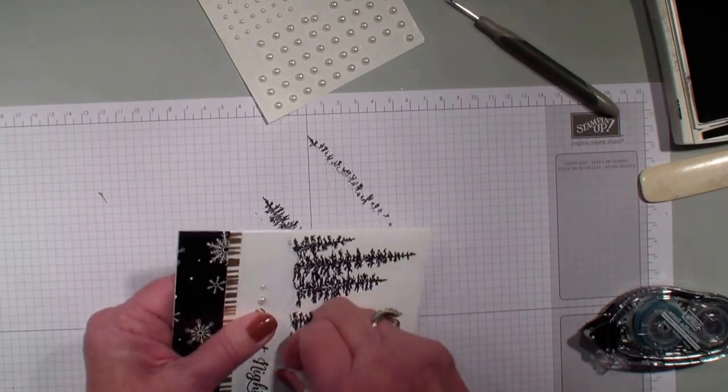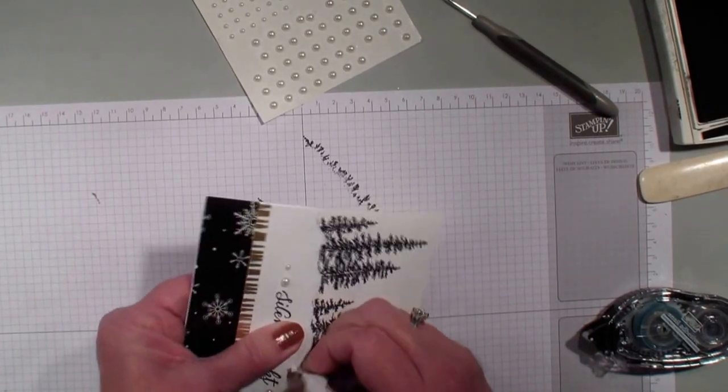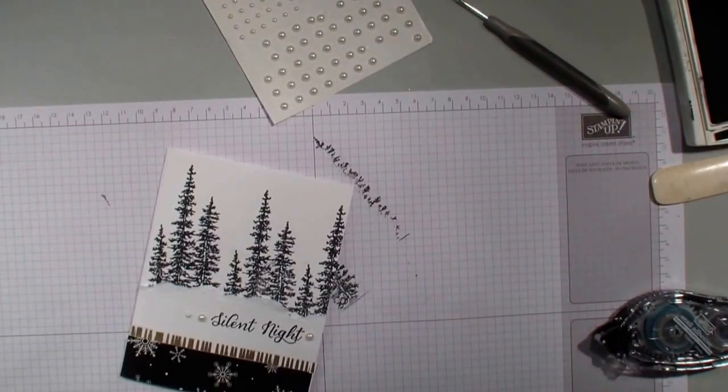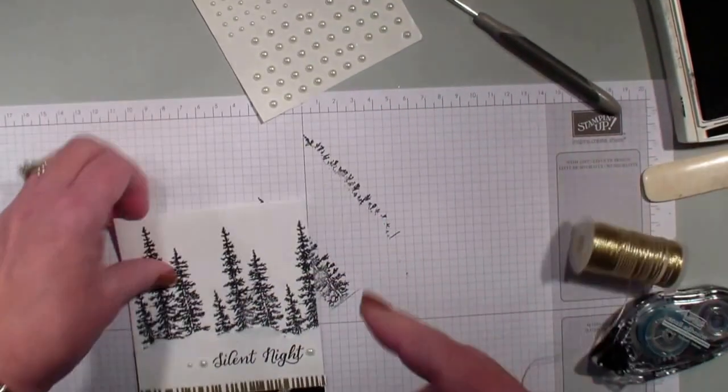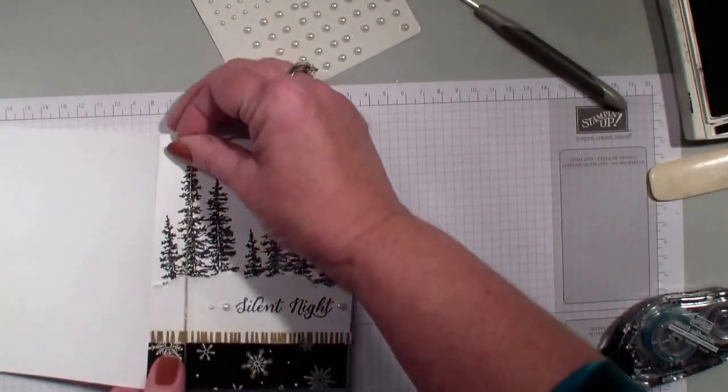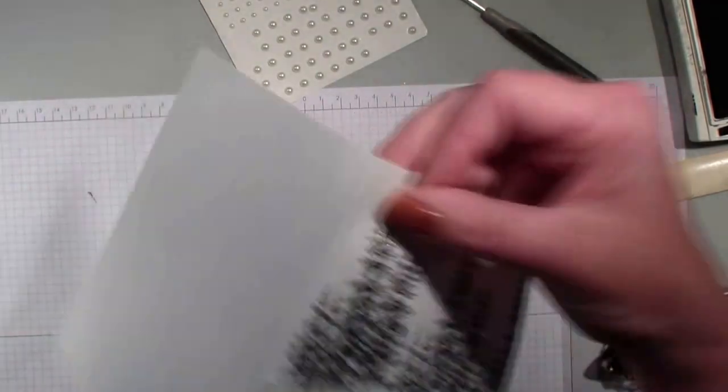Next what I'm going to do is bring in my Gold Cording. This too is a product that is in that Holiday Catalog. I'm just going to wrap a few strands of that around my card just to accent that gold in the Designer Series paper.